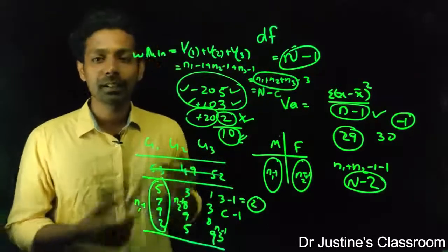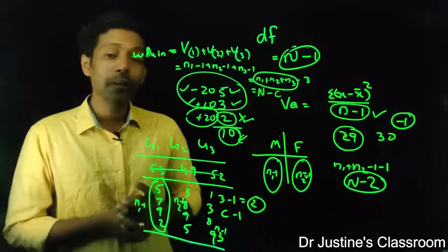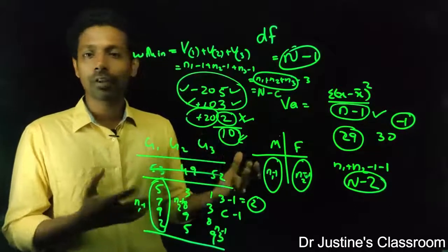So this is how we calculate the degree of freedom for within group variance. What about total variance? Total sample size n minus 1. This is the total degree of freedom.